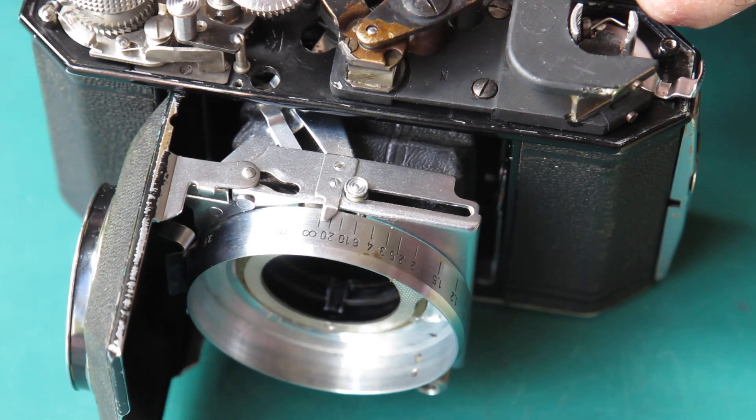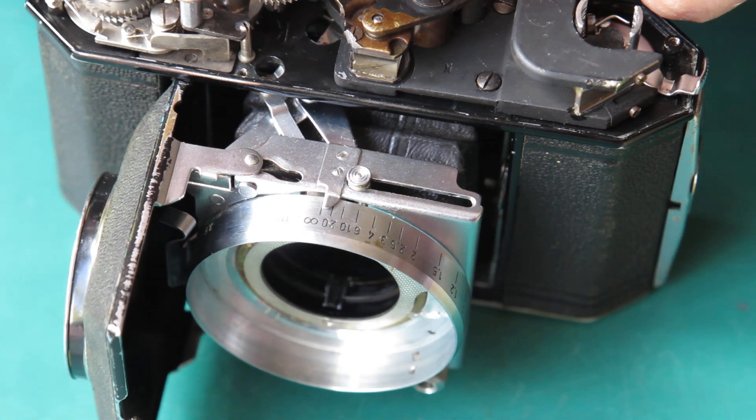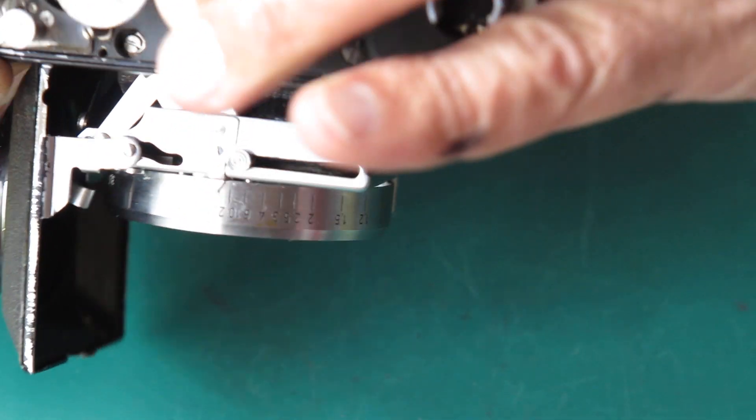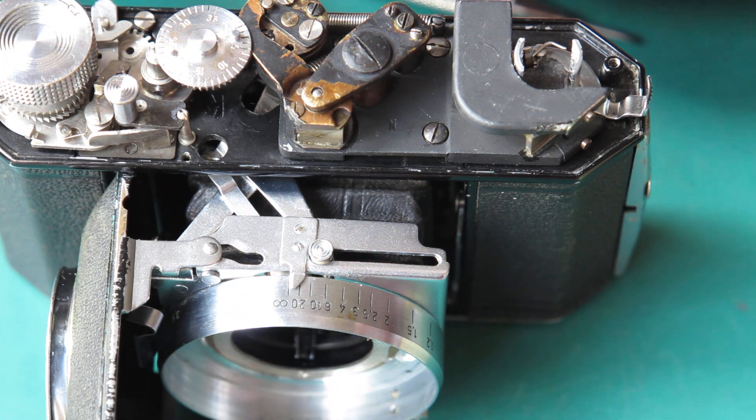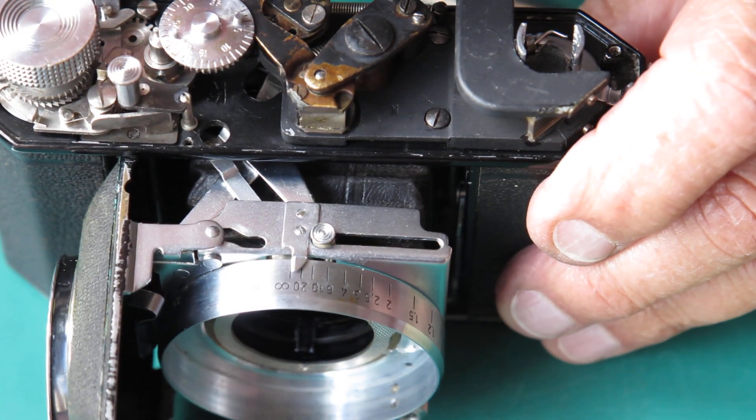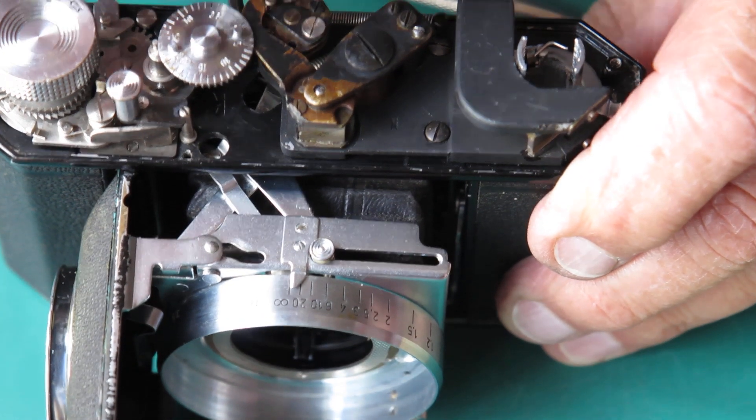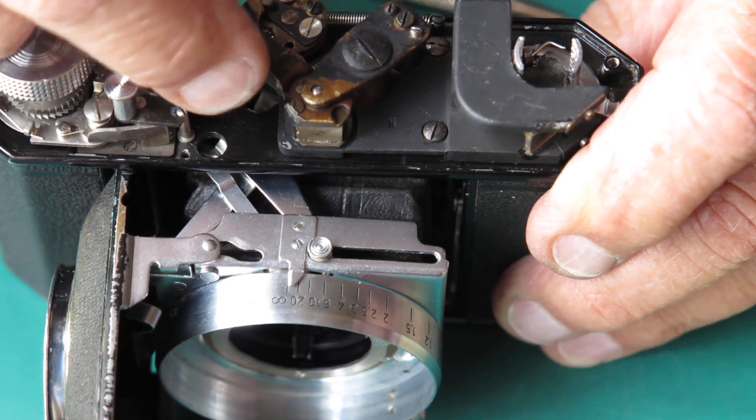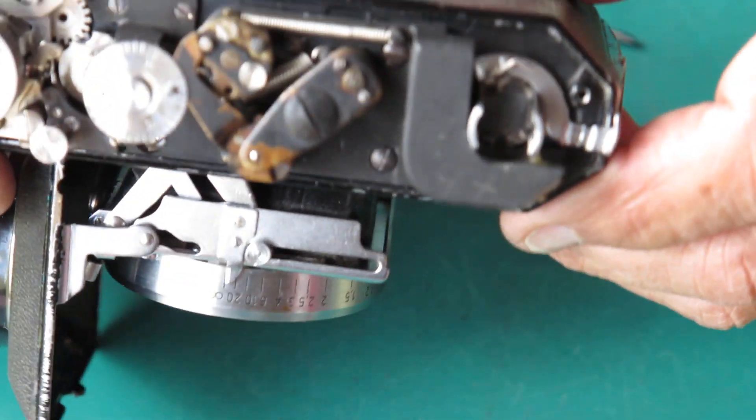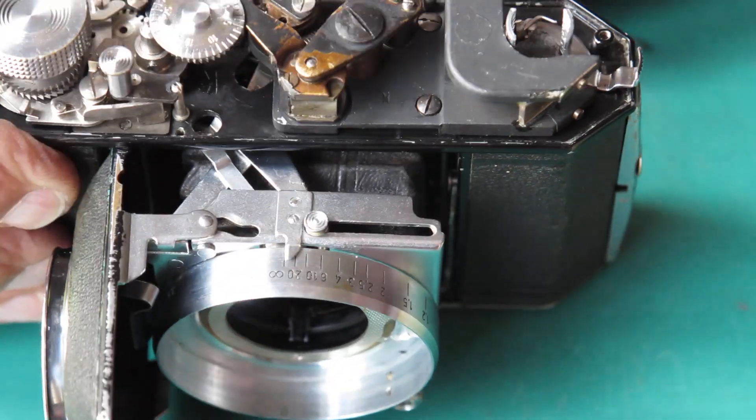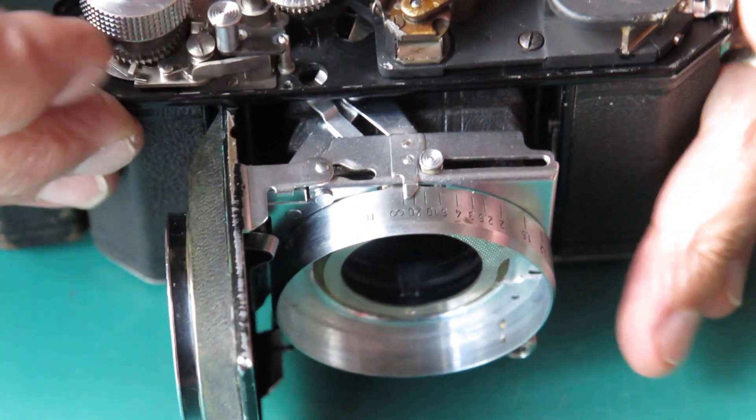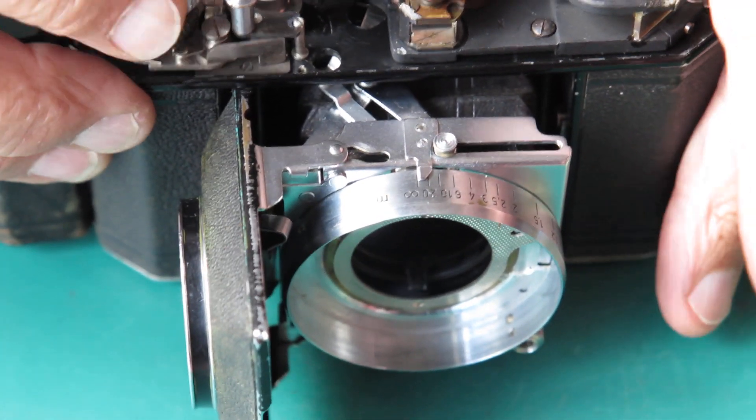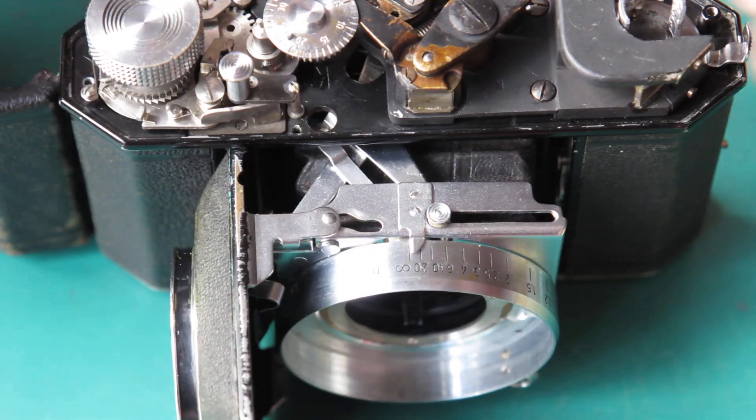I can see a mark on the top of the rangefinder arm where that's actually been rubbing. That arm is sitting a bit high. Of course, it didn't begin its life with this particular camera. So, would the frame counter work? Let's have a look. Yep. I can see that that goes.